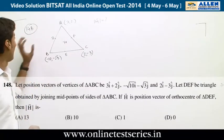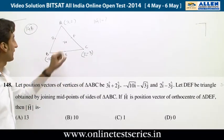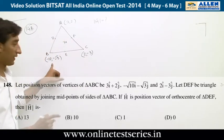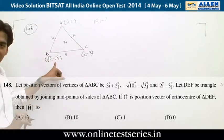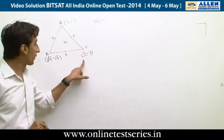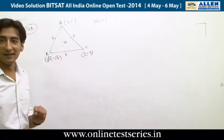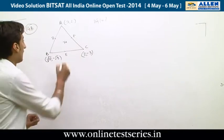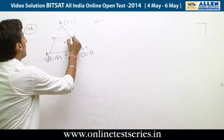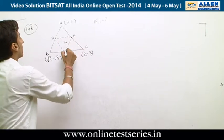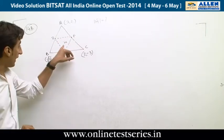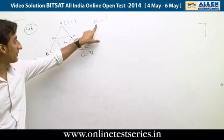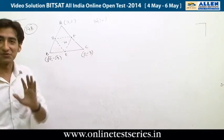Question 148 is from coordinate geometry. Three points are given: A(3, 2), B(-√10, -√3), and C(2, -3). These form a triangle, and D, E, F are the midpoints of the sides. Joining these three midpoints forms another triangle, and H is the orthocenter of that triangle. We need to find the magnitude of vector H.